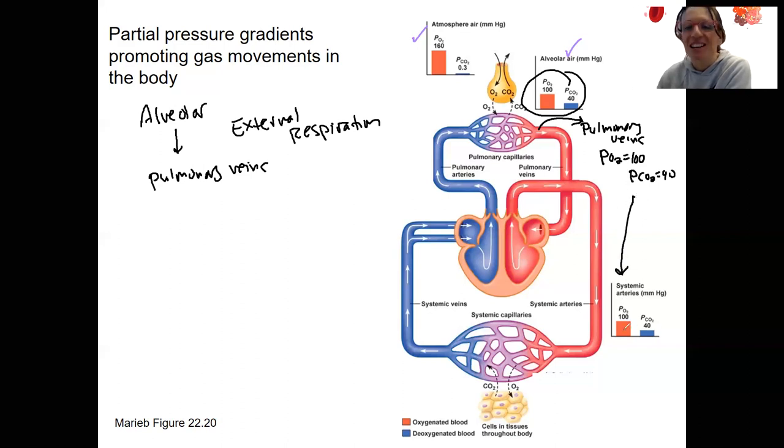So systemic arteries still have that. And you probably can see ahead of time, we're going to have a drop, a change, drop of oxygen, increase in carbon dioxide at those systemic capillaries.